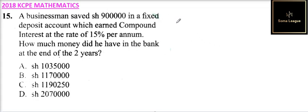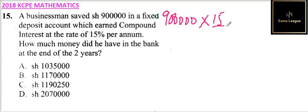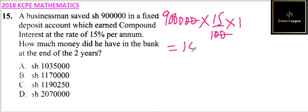So you can do this separately. For the first year, take 900,000 and multiply by 15 divided by 100 — that is 15% — for one year. When you multiply 9,000 times 15, you get 135,000. So that is the interest earned in the first year.